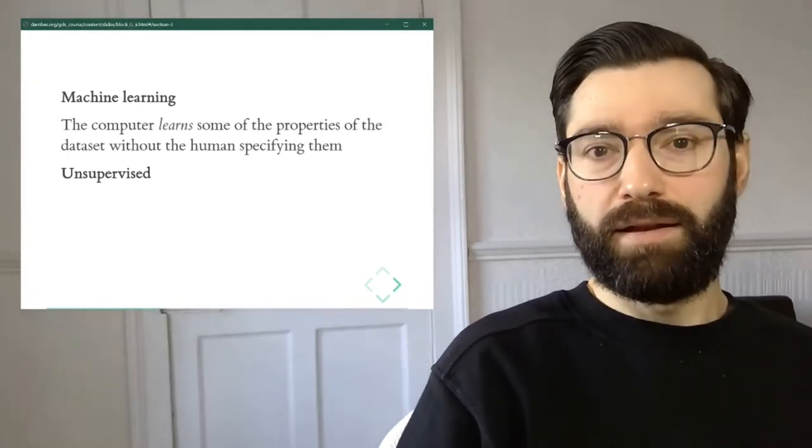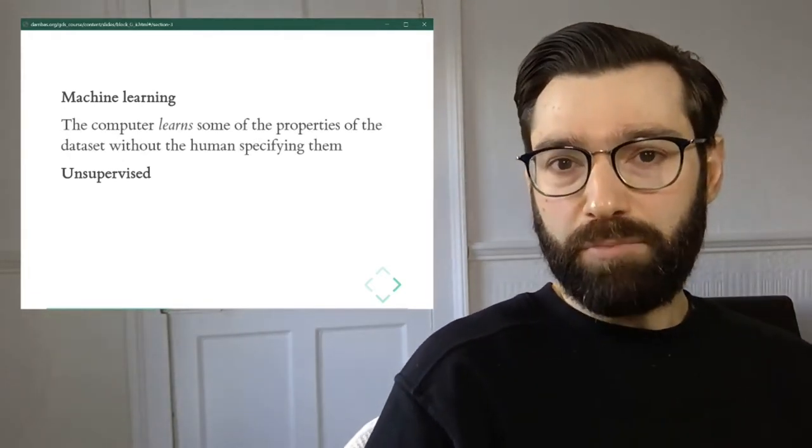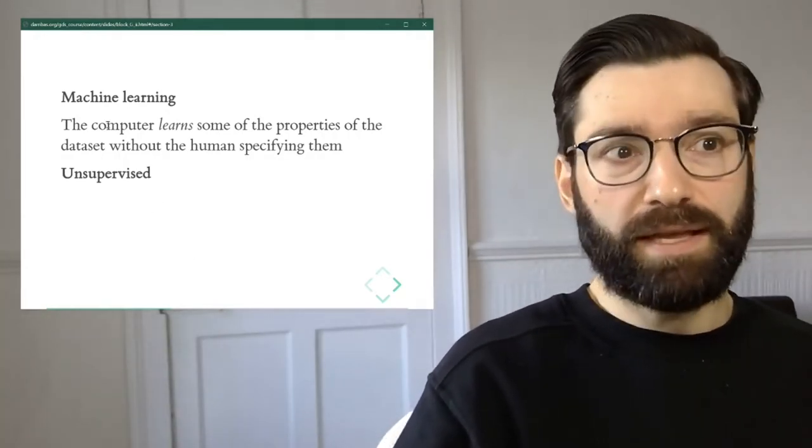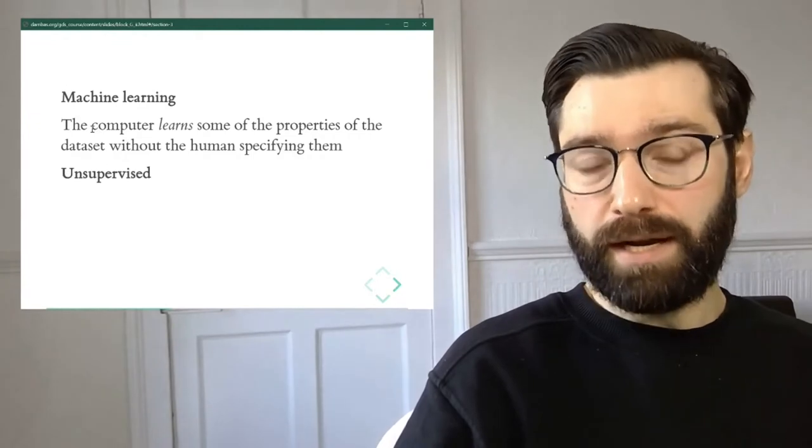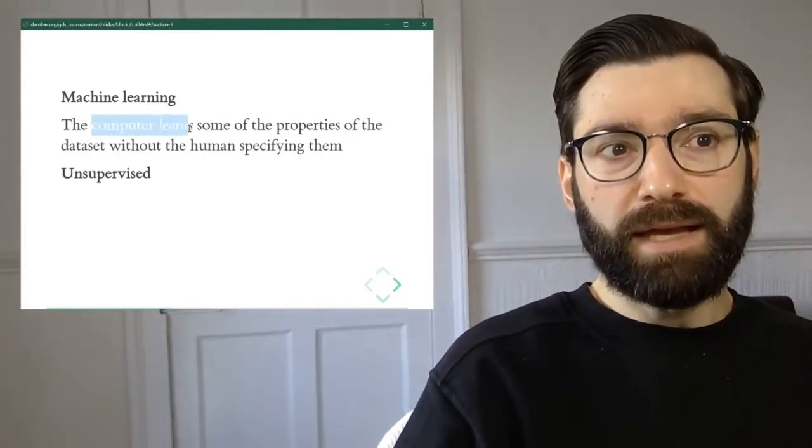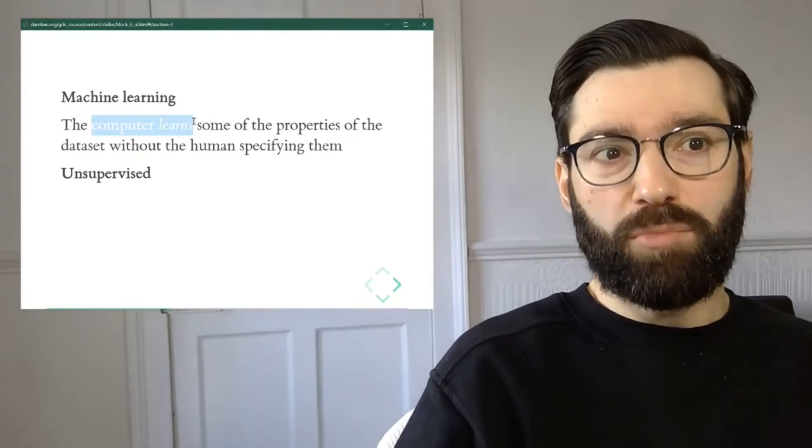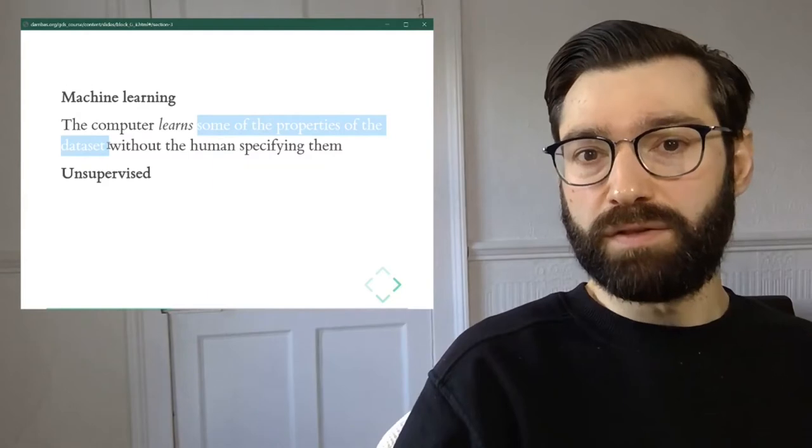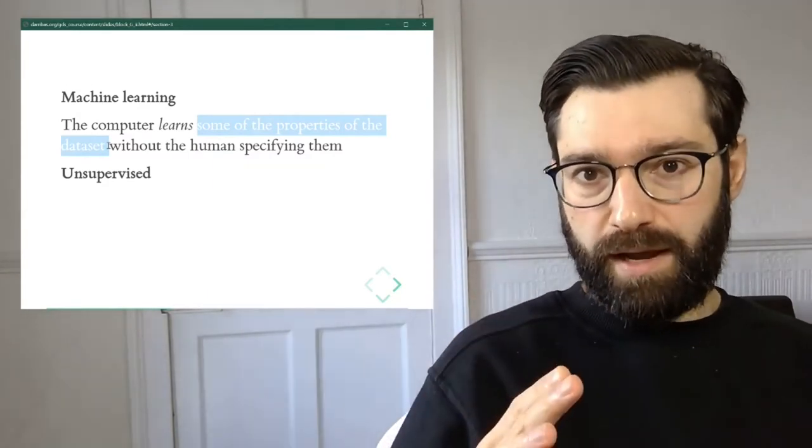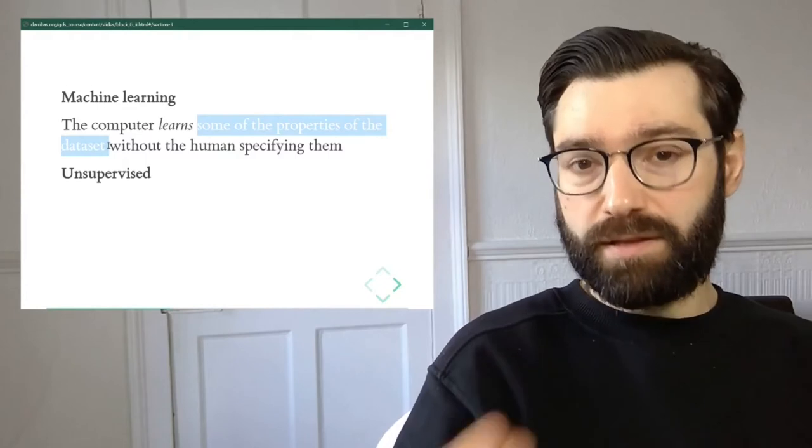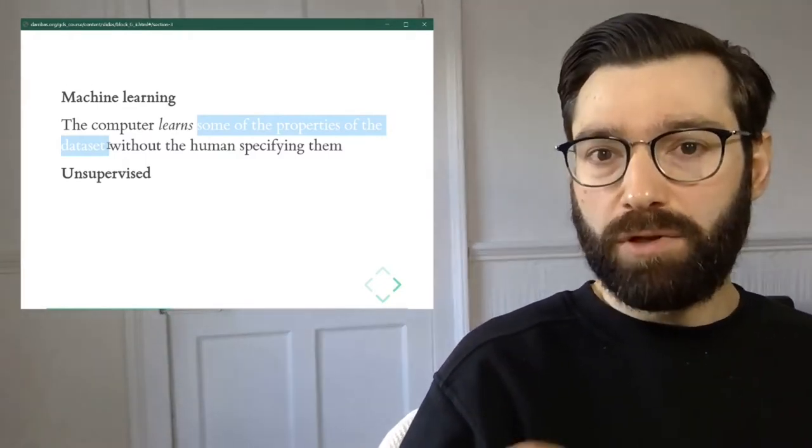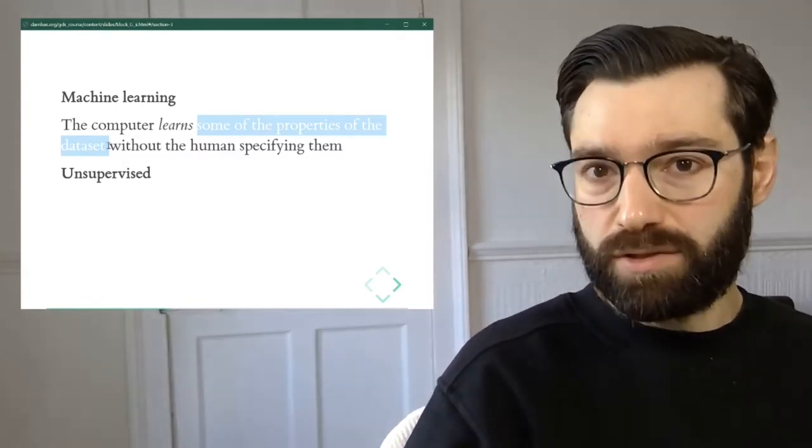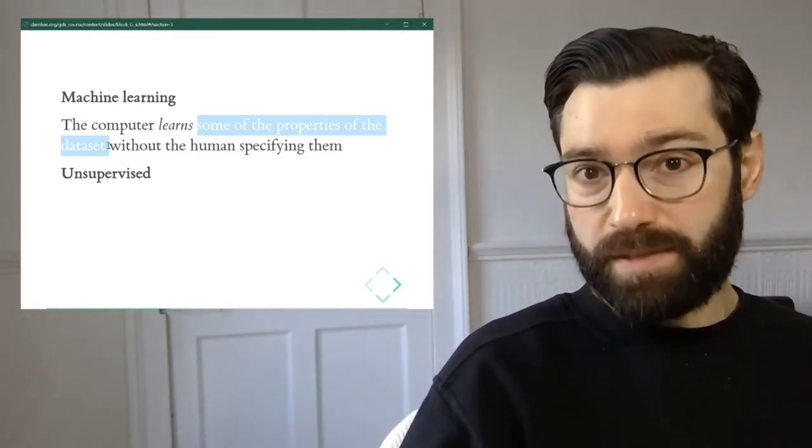Let's start from the back and explain why it's called machine learning. The idea behind this learning is that the computer, by running an algorithm like the ones we're about to see, is able to learn some of the properties of the dataset without human intervention.